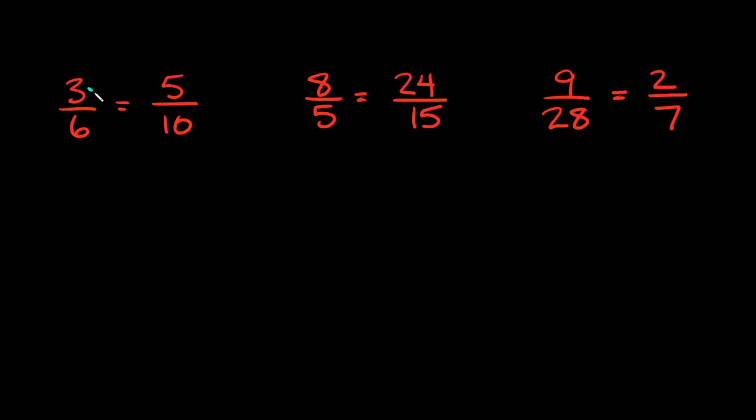And the way you do that is by literally cross-multiplying. You literally draw like a crisscross right here and then you multiply the numbers together.